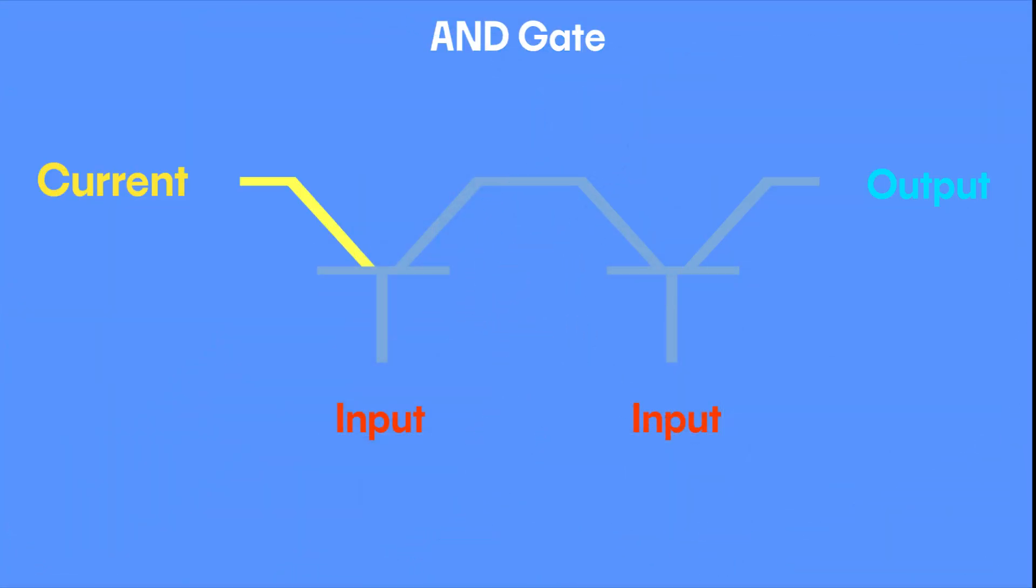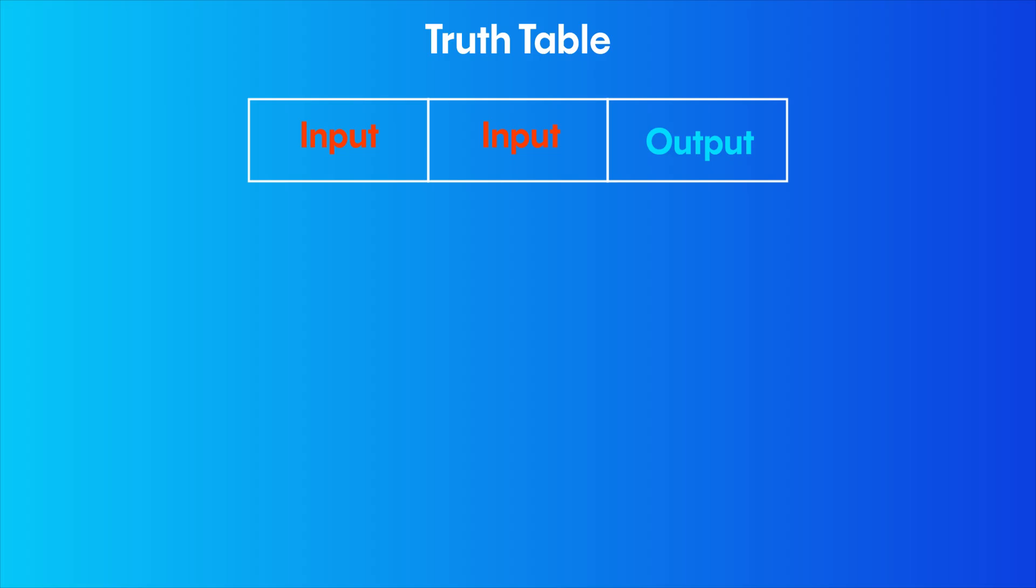Connecting two simple transistors side by side creates an AND gate, another logic gate key to boolean logic. Only when both inputs are true will the output be true. For all other combinations of inputs, the output will always be false. This too can be represented in a truth table.